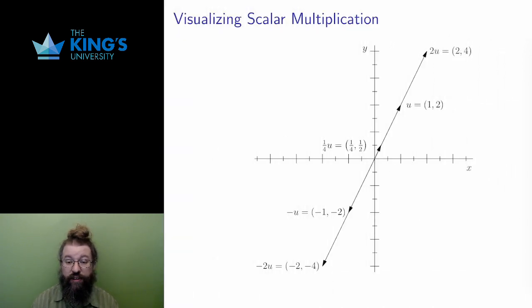Scalar multiplication explains the term scalar, since it scales the vector. To multiply by 2 is to double the length of the vector. To multiply by a quarter is to shrink the length to one-quarter of the original. Multiplication by a negative reverses the direction. Multiplication by negative 1 is a direct reverse, and multiplication by negative 2 reverses the direction and doubles the length.